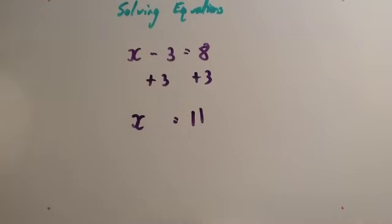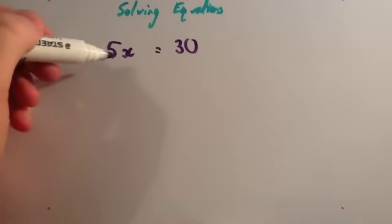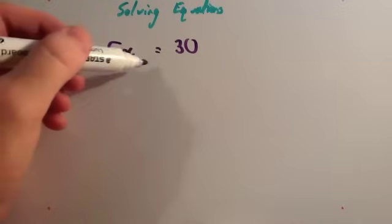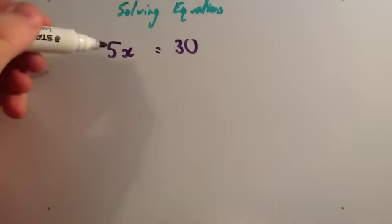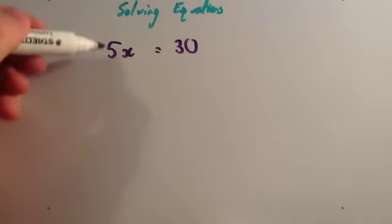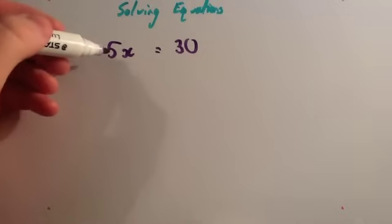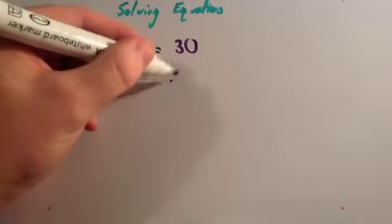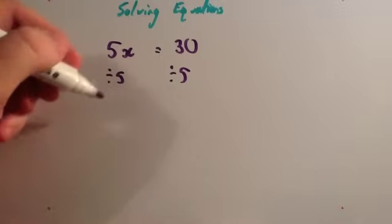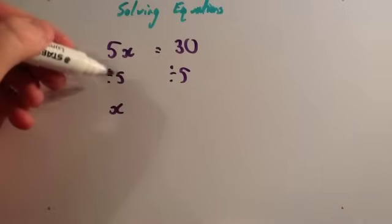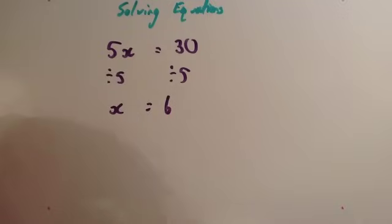Let's have a look at another example. This time it's 5x equals 30. Remember, 5x means 5 multiplied by x, so this means 5 times x equals 30. Whenever you solve an equation, you want to get letters on one side and numbers on the other. So you want to get rid of the 5 in front of the x. To get rid of the 5 — remembering that's 5 multiplied by x — you're going to divide both sides by 5. 5x divided by 5: 5 divided by 5 is 1, so that's 1x. In algebra you just write x. So you're left with x, and 30 divided by 5 is 6. The answer is x equals 6.